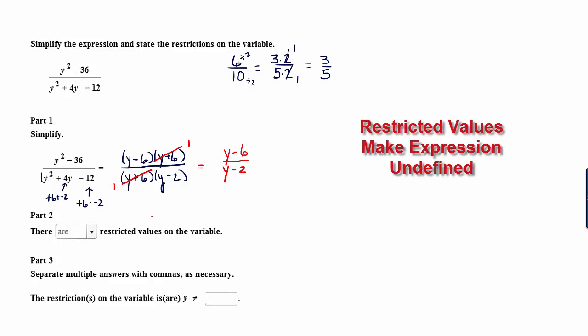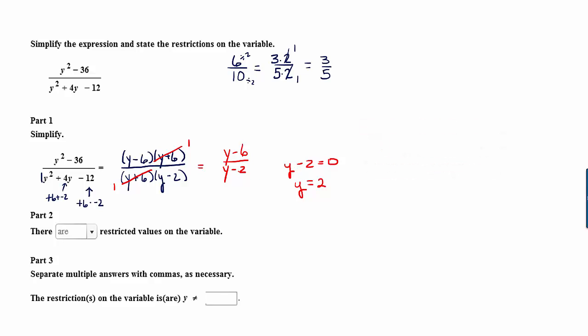To have restricted values means that it's possible that the denominator is equal to 0. For example, in this case, in order for y minus 2 to be 0, we would have y equal to 2. If you were to plug in 2, we would get a 0 in the denominator causing the expression to be undefined. So the answer to part 2 is yes, there are restricted values.